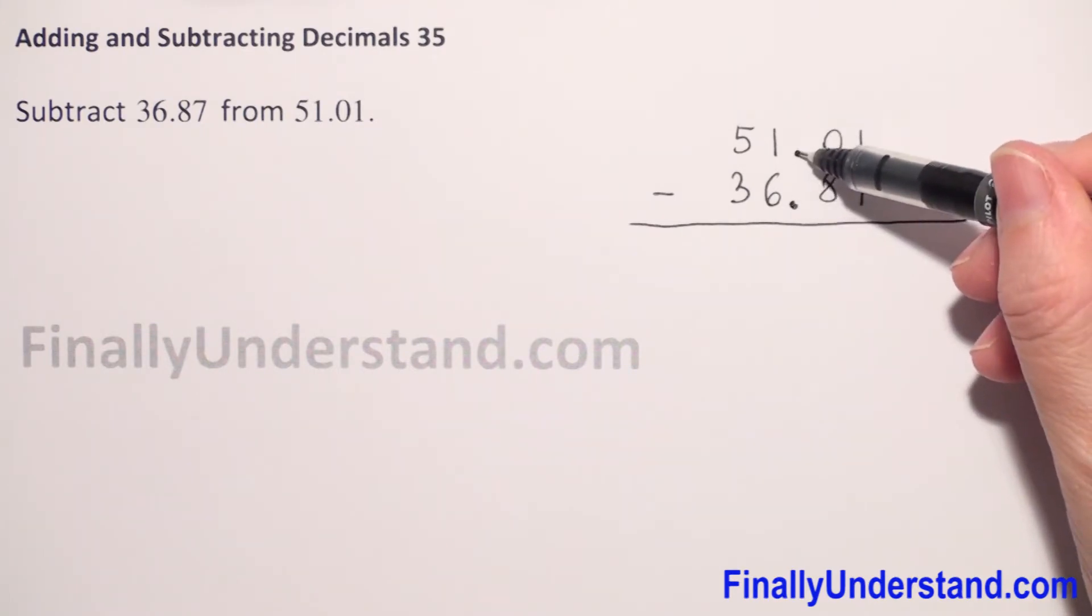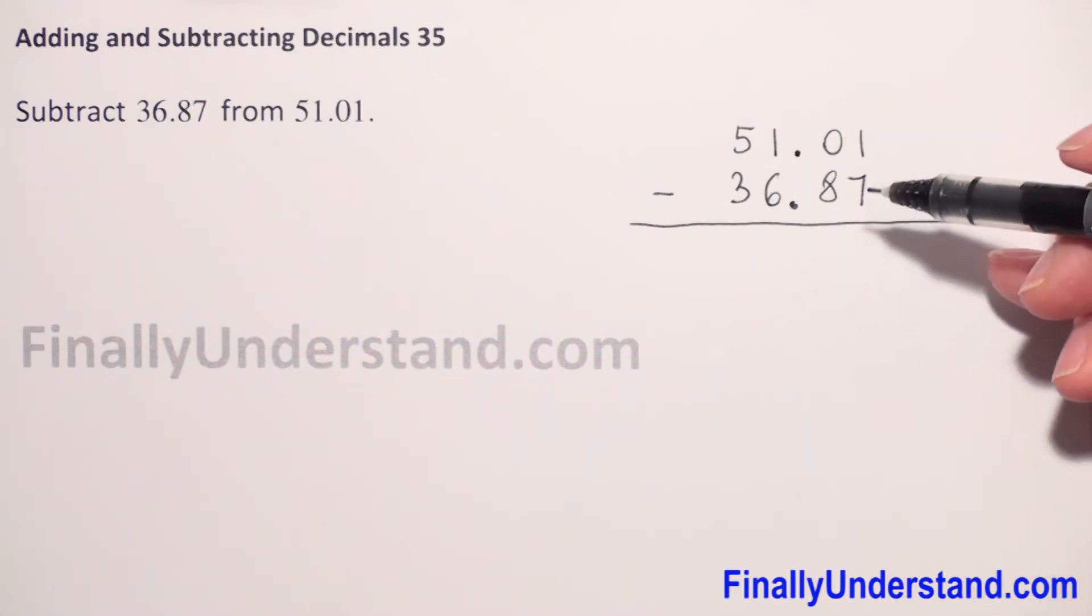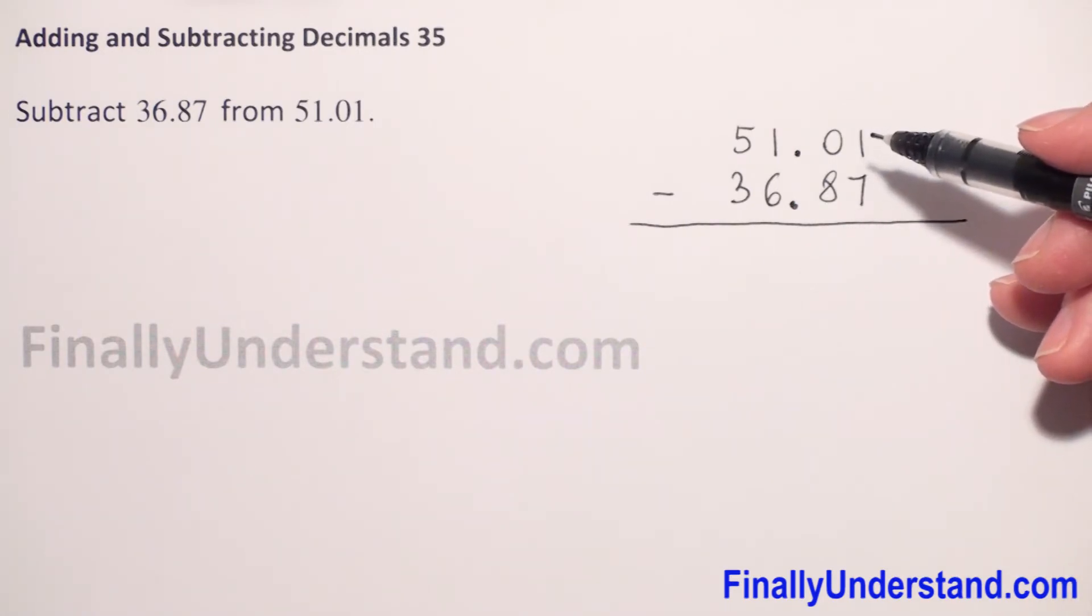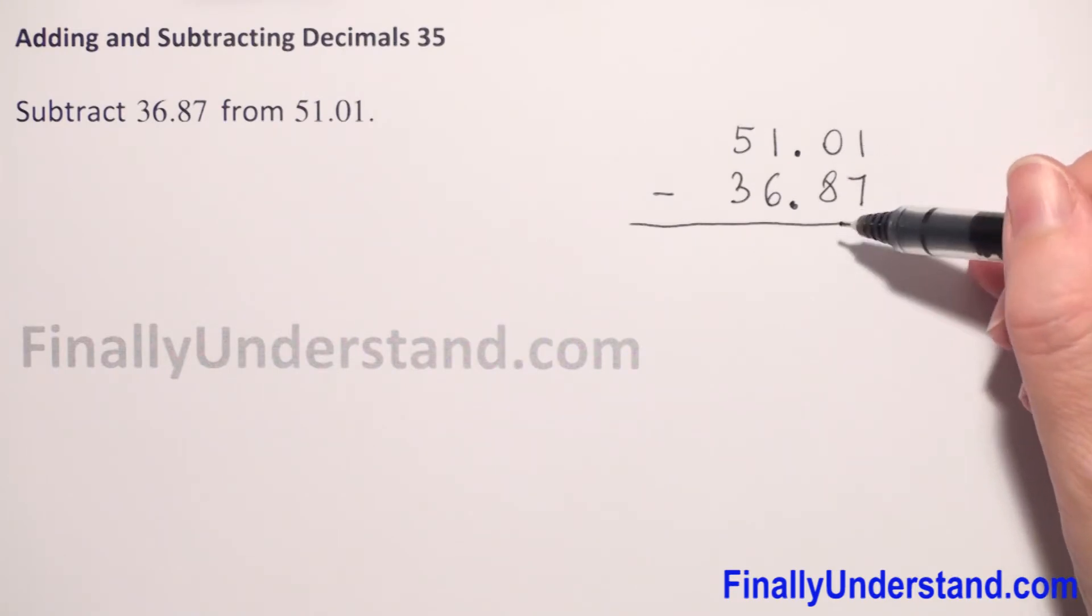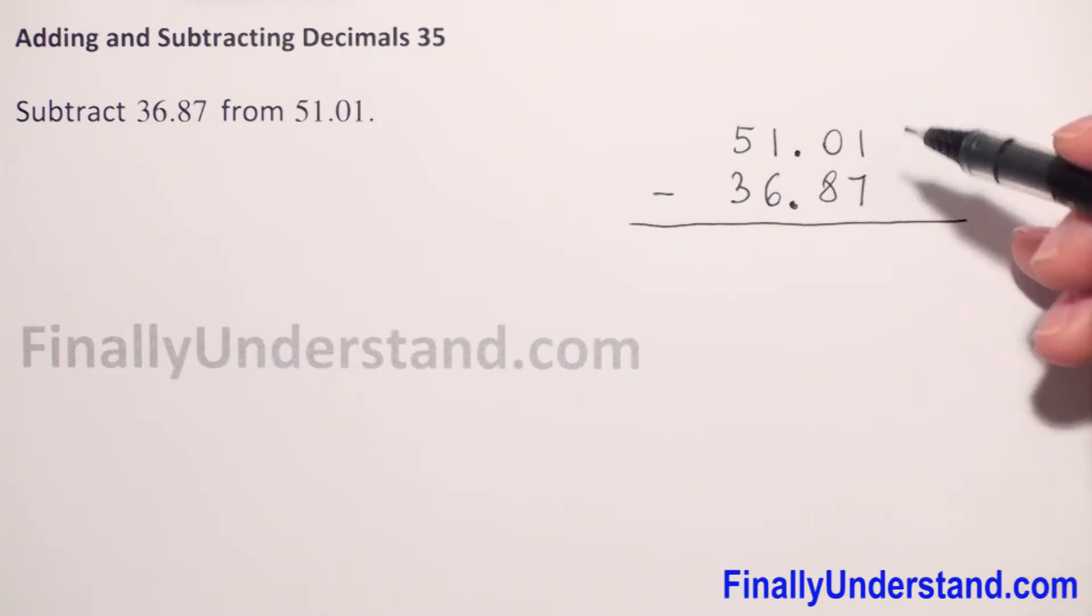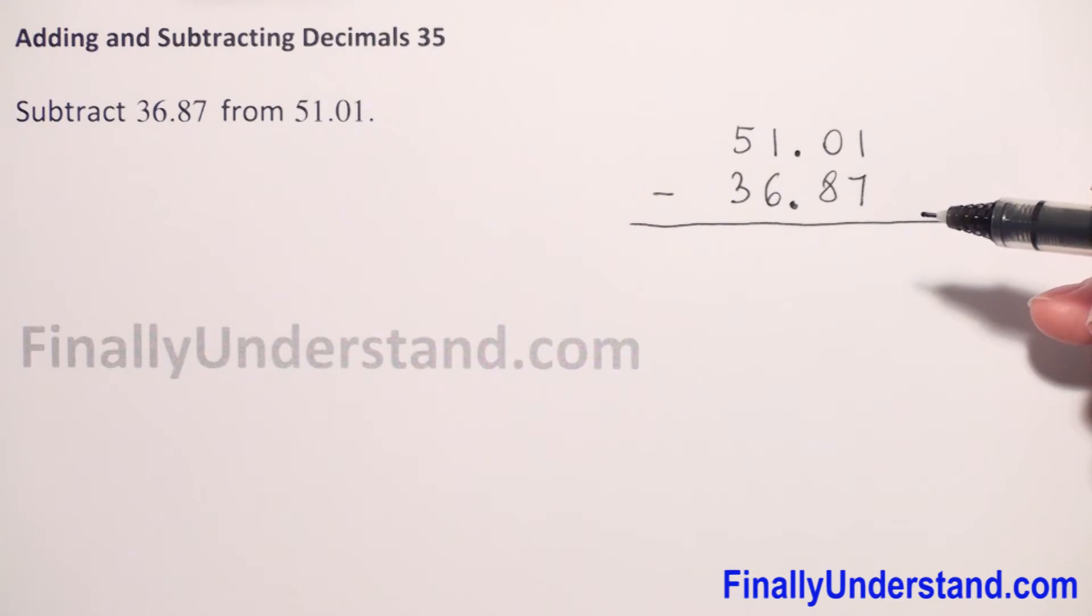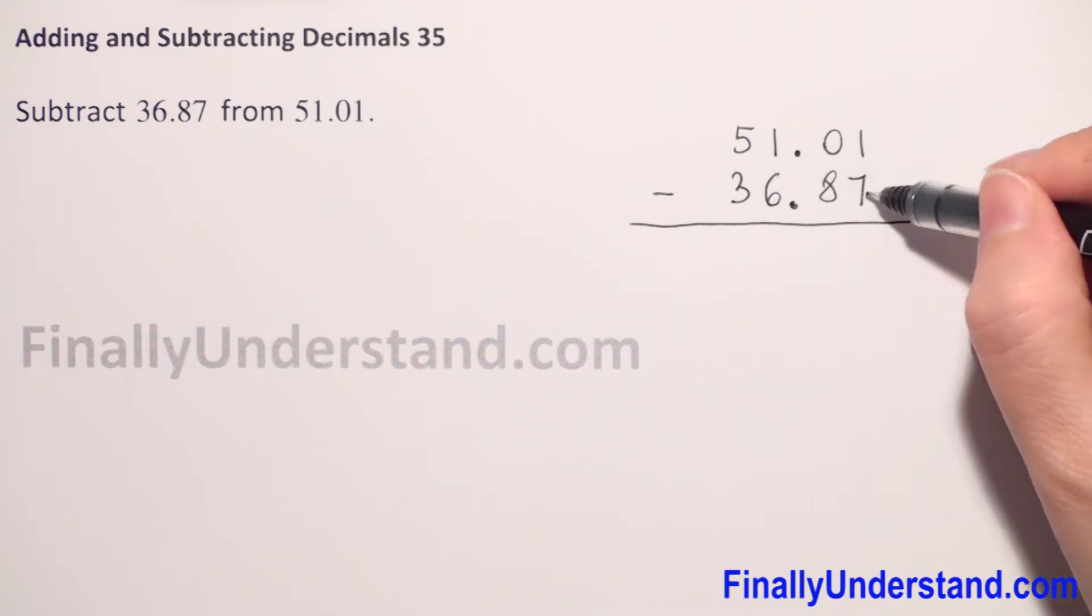Decimal points are in the same column. Next, we check if we have numbers on the top greater than on the bottom. We use the same rule as for subtraction of whole numbers. One is less than seven.